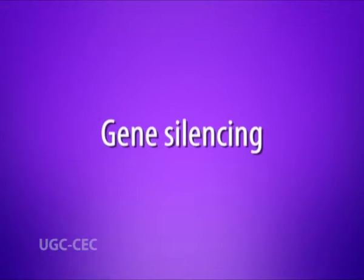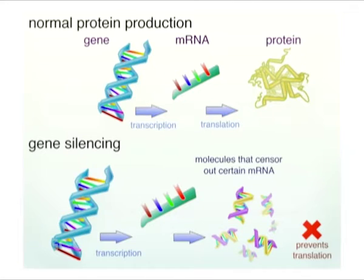There are several applications of transfection of cell lines. First is gene silencing. The ability to silence genes plays an important role in molecular and cell biology and can be readily applied through transfection. Gene expression can be efficiently reduced or eliminated by introducing small non-coding RNA molecules that inhibit RNA translation through a process termed RNA interference, or RNAi.